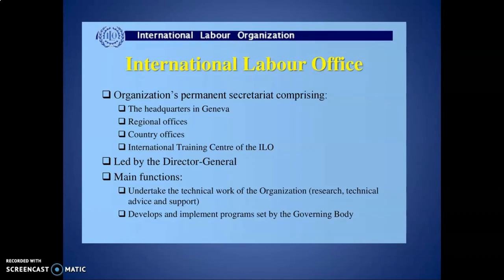The third body is the International Labour Office, which is the permanent secretariat of the organization comprising regional offices, country offices, and ILO training centres. It is led by the Director General and its main functions are to undertake technical work and to develop and implement programs set up by the governing body.